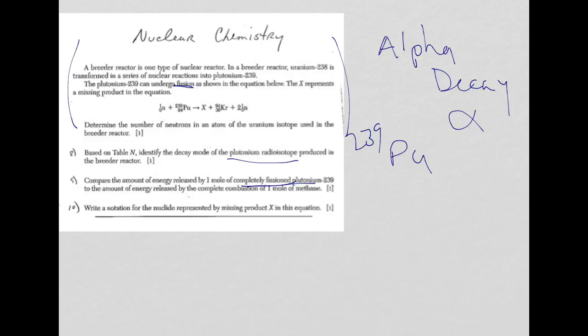Let's take a look at question 10. Write the notation for the nuclide represented by the missing product X in this equation. Just like the other videos, in order to balance or figure out the identity of the missing particle, I have to add up mass numbers on both sides of the equation and atomic numbers on both sides.